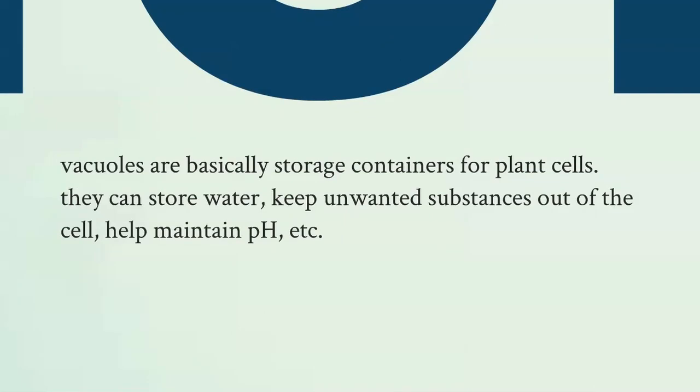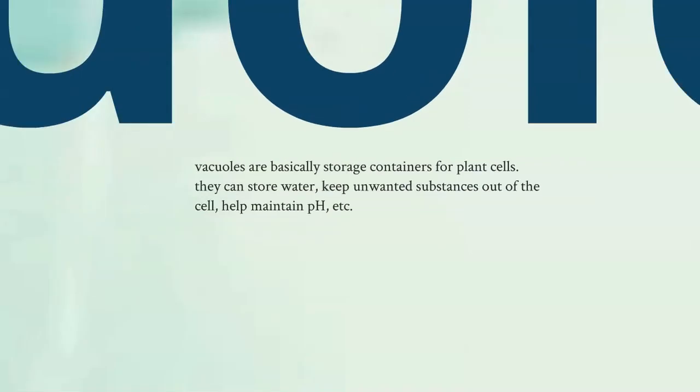Vacuoles are storage containers for plant cells. Animal cells have them too. They're just smaller, but they store water. Keep unwanted substances out of the cell. Help maintain pH, which remember is whether something's an acid or a base. You want it to have a pH of 7, nice and stable.